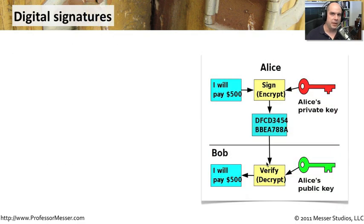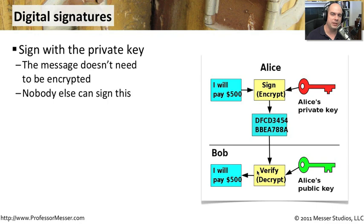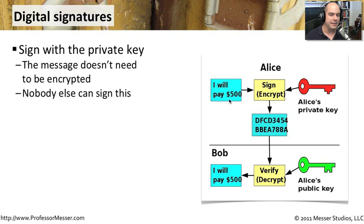The relationship between the public key and the private key allows us to do some interesting things with digital signatures. Digital signatures confirm that information has gotten from point A to point B without anything changing — there's non-repudiation associated with that. For example, Alice creates a document that says 'I will pay $500' and signs it with her private key.